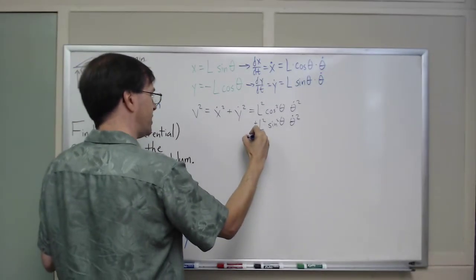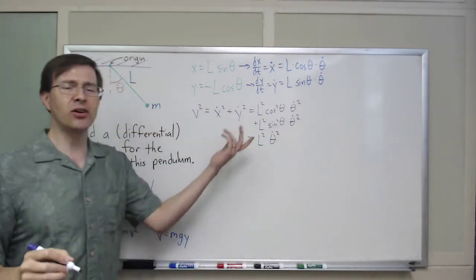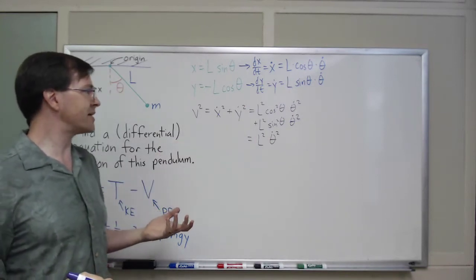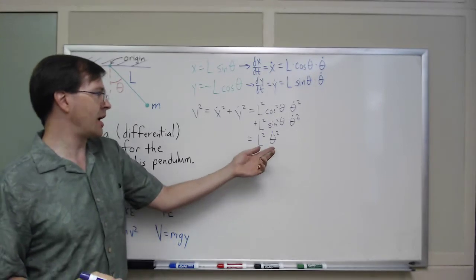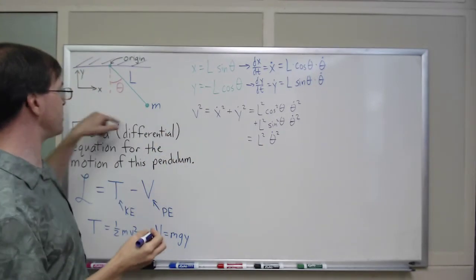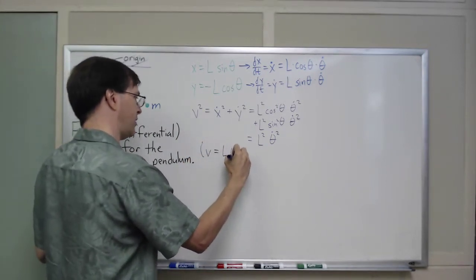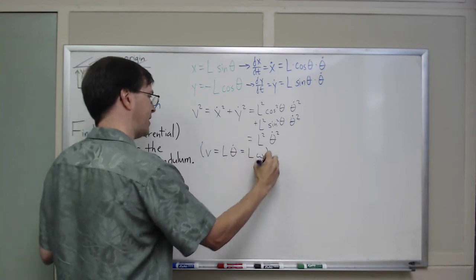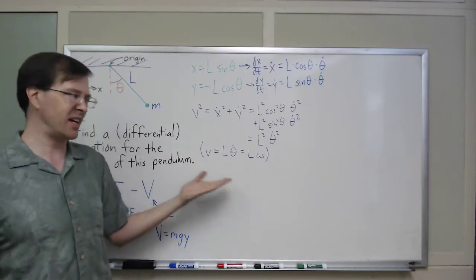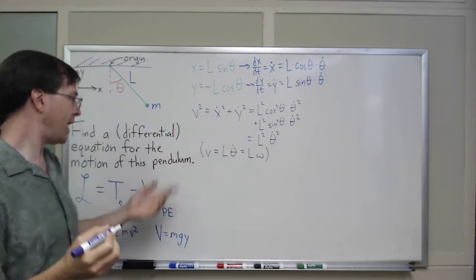And cosine squared plus sine squared is one. So, this is really just L squared theta dot squared. And honestly, I could have guessed this without even going through all this process, because I happen to know that speed equals L times theta dot. That's for circular motion. Since this is constrained to be a fixed thing, I could have just said V equals L theta dot, which is the same as L omega, something like that. Yeah, V equals R omega is a known thing. So, I could have gotten straight here without even doing the derivatives there.